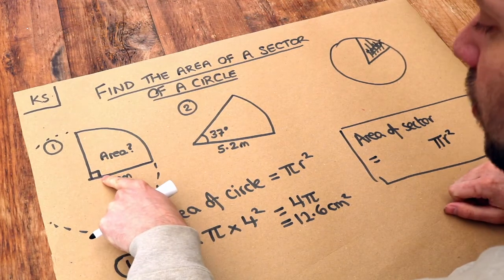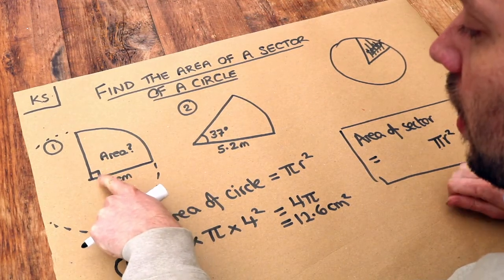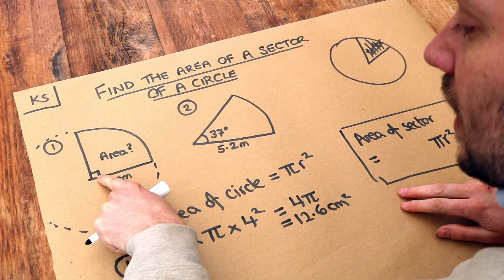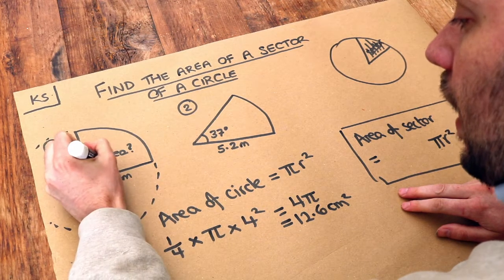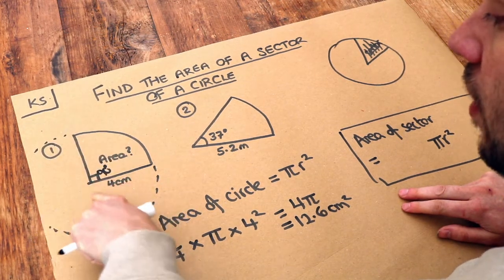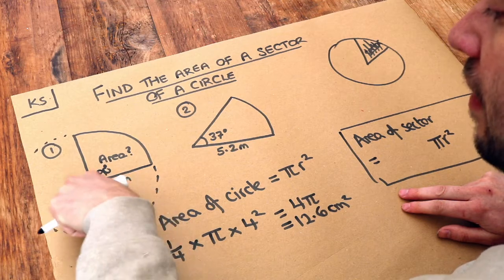In this particular case, that fraction was a quarter of a circle. And why was it a quarter? Because we divided that angle of 90 degrees there by 360, because it's 90 three-sixtieths of a circle.